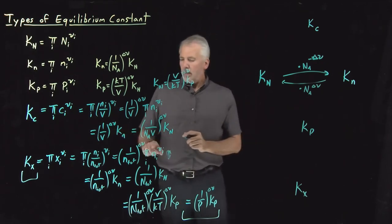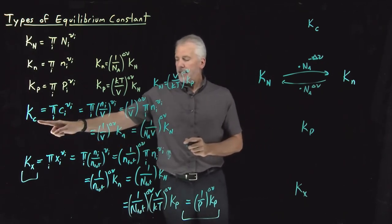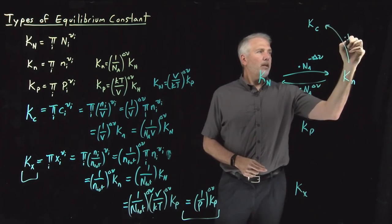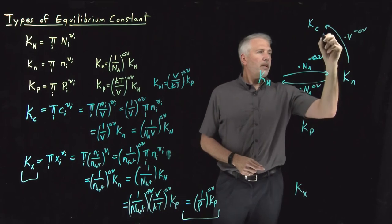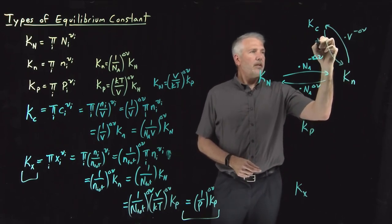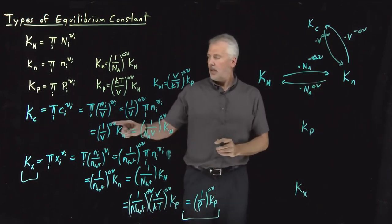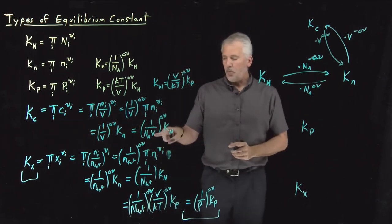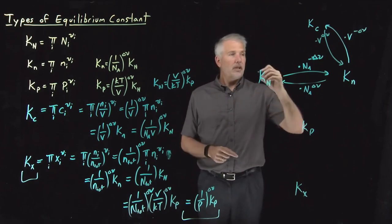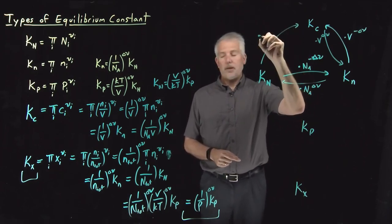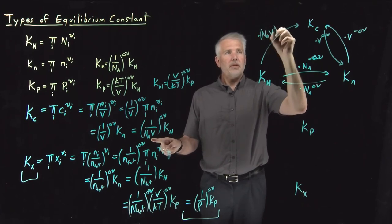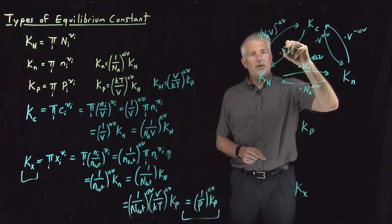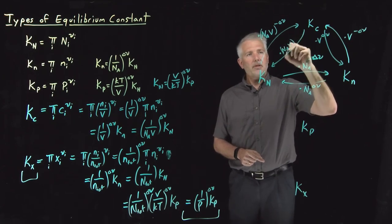To get from Kn to Kc, multiply by (1/V)^Δν, i.e., multiply by volume to the negative Δν; in the reverse direction multiply by volume to the positive Δν. To get from KN directly to Kc, multiply by (NA·V) to the negative Δν; in the reverse direction multiply by (NA·V) to the positive Δν.